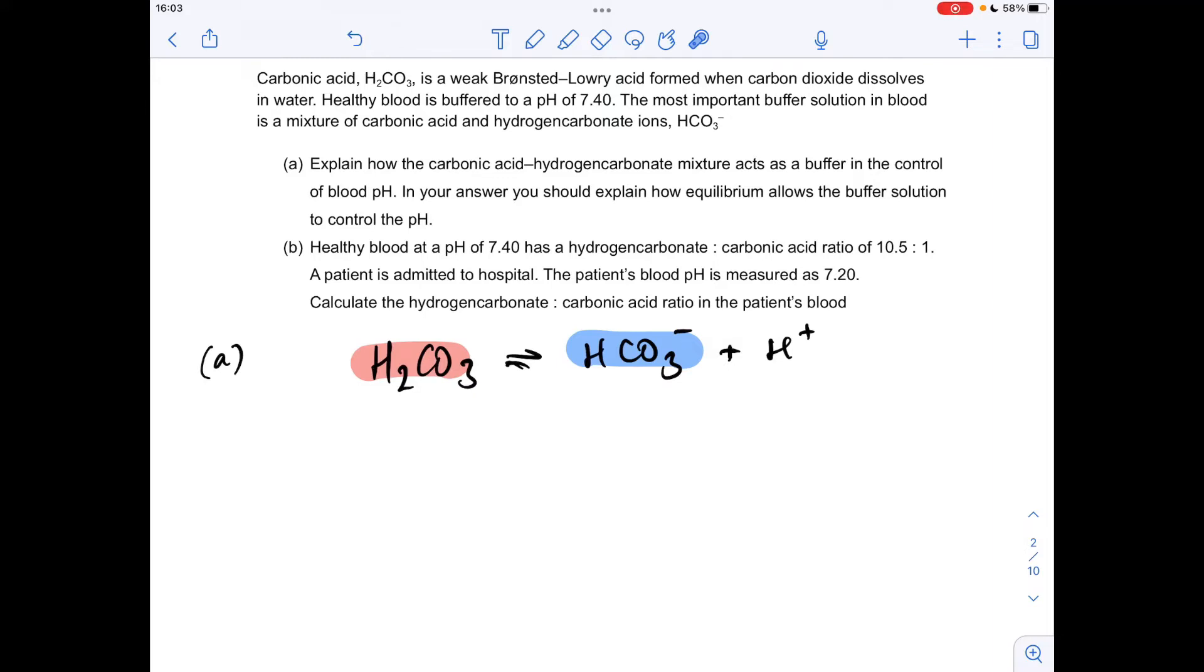Both of these species together act as a buffer solution. If acid is added, you're increasing the H+ concentration. This reservoir of hydrogen carbonate ions can accept the extra H+ ions and send the equilibrium over to the left.